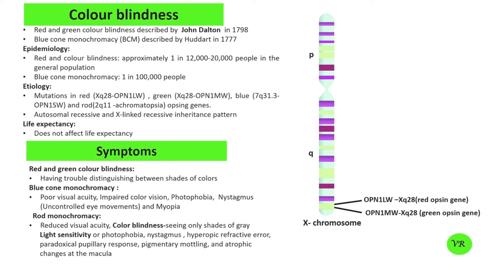Hello friends, today I am going to discuss about Colour Blindness. Colour Blindness was first scientifically described by John Dalton, an English chemist and physicist in 1794. Dalton himself was colour blind and his condition led him to study and report on the phenomenon.